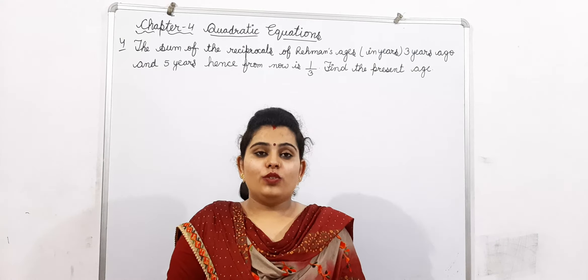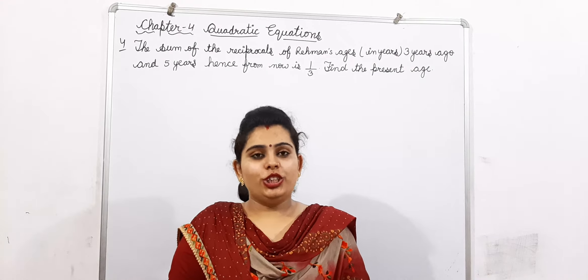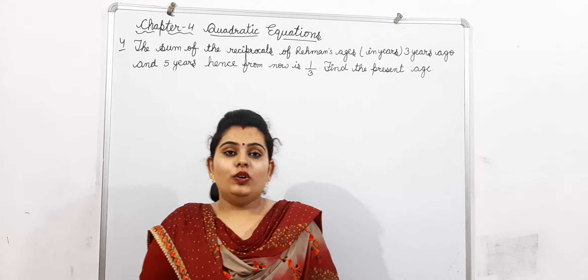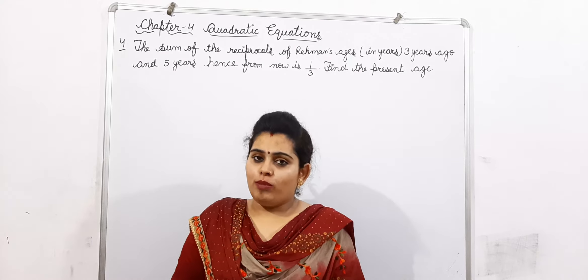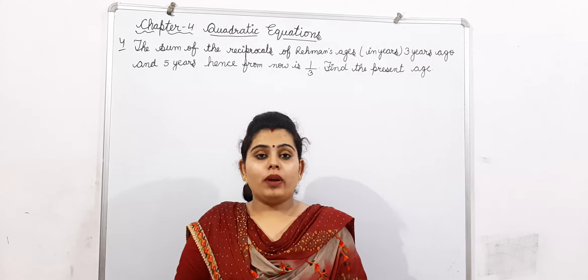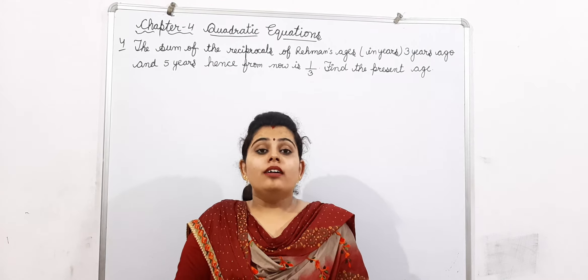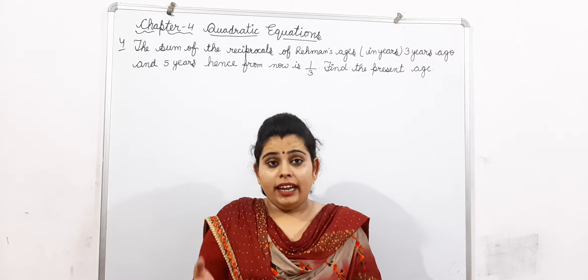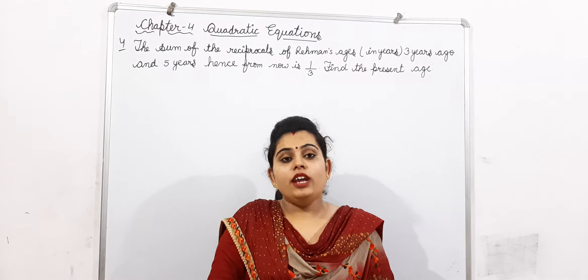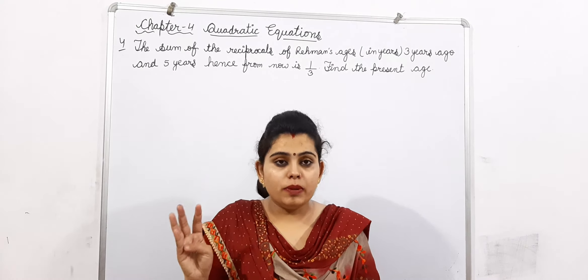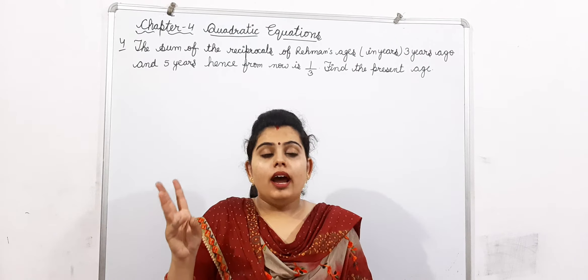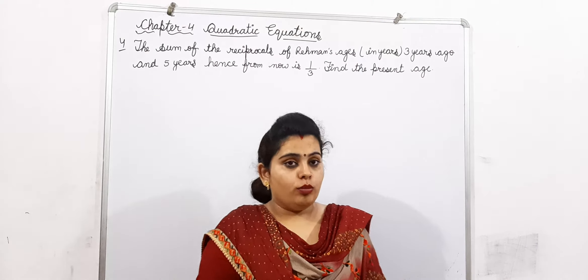In this video, we will do question number 4 of exercise 4.3. We will do word problems. From these word problems, first of all, we have to prepare or make a quadratic equation. Then we can solve these quadratic equations by using any method — by middle-term splitting method, completing the square root method, or by quadratic formula.